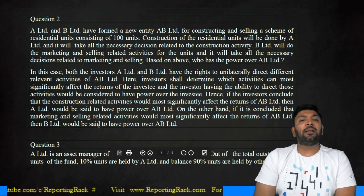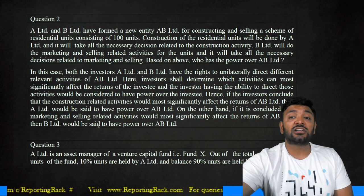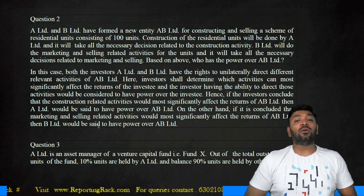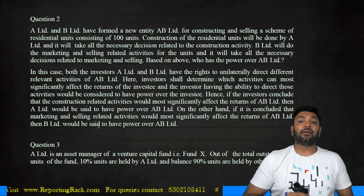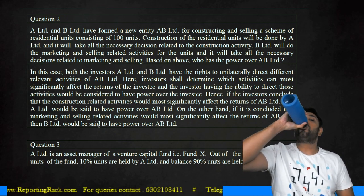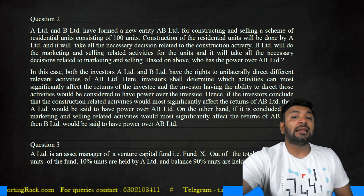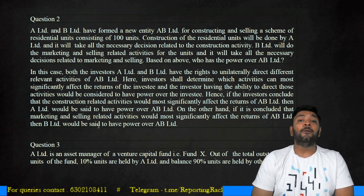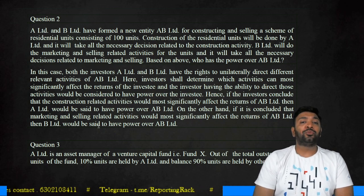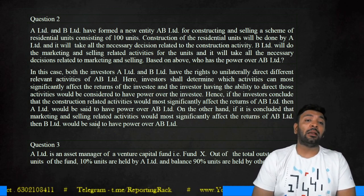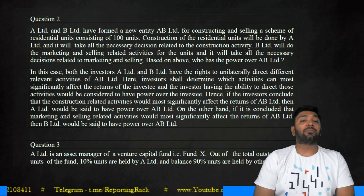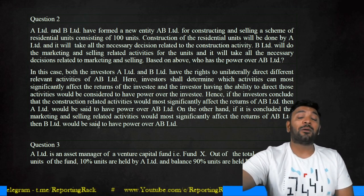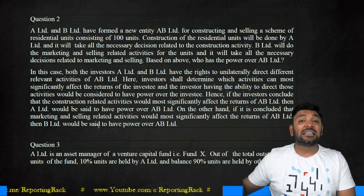Look at the next question: A and B have formed a new entity, AB Limited, for construction and selling of residential units consisting of 100 units. Construction will be done by A, and it will take necessary decisions relating to the construction activity. Company B Limited will do the marketing and selling related activities of these units and will take all necessary decisions relating to marketing and selling. Based on the above, who has the power over AB Limited — is it Company A or Company B? We cannot decide, because A is performing the function of construction and B is performing the function of sales.